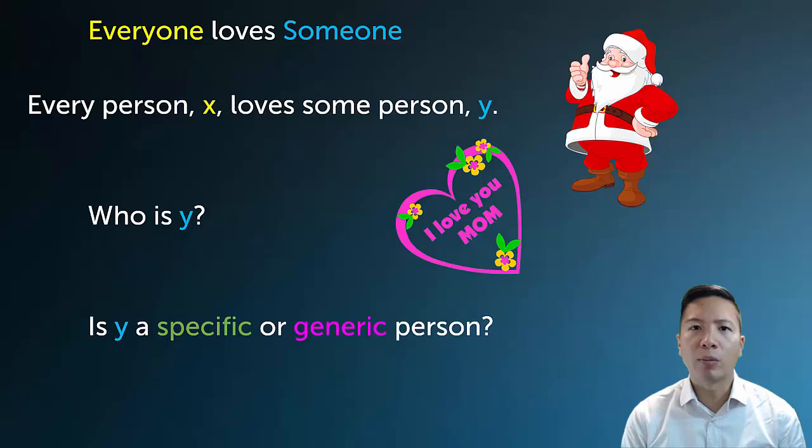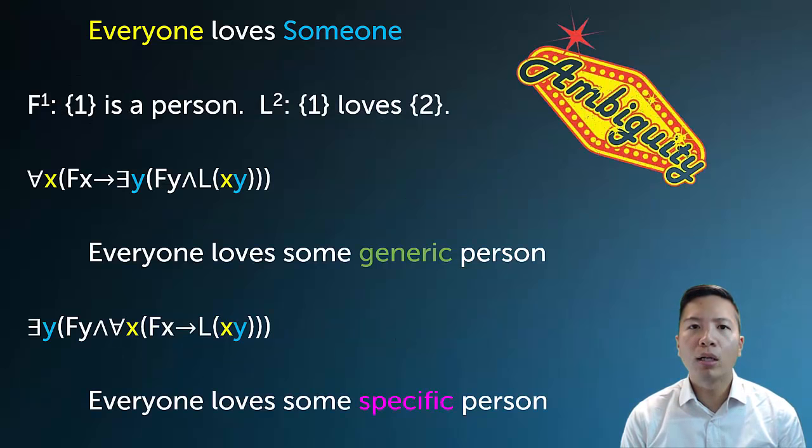The other way we can understand everyone loves someone is to say that there is some particular person, some specific person that everyone loves, like Santa Claus. And in this case, it actually has a very different meaning. So how can we capture the different meanings of an ambiguous sentence like this? Well, it turns out that it's actually the order of the quantifiers that will dictate the true meaning.